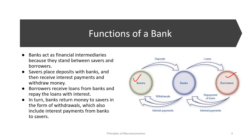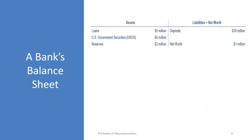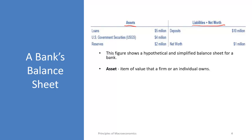To better understand a bank, let's look at a balance sheet. A typical bank balance sheet has assets on the left side and liabilities plus net worth on the right side. An asset is an item of value that a firm or individual owns — for a bank, loans they have made are assets, along with US government securities and reserves. Liabilities are the amounts or debts that a firm or individual owes. Every time we deposit money with a bank, it becomes a liability for the bank.